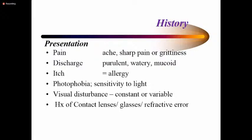When you look at a patient with a painful red eye, ask about the nature of the pain: is it sharp, an ache, or grittiness? Patients sometimes report irritation as pain, so you need to find out what kind they mean. Discharge can be purulent, watery, or mucoid — purulent points toward bacterial infection, watery toward allergic or viral, and mucoid toward allergic. Severe itching points toward allergic conjunctivitis, though eyelid disease and dry eye can also cause some itching. The itching of allergic conjunctivitis is quite intense compared to other causes.